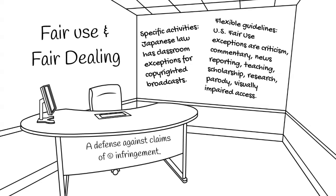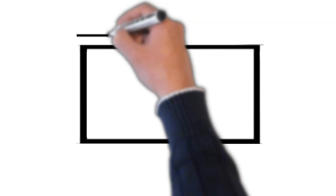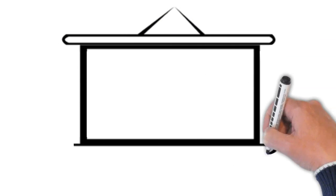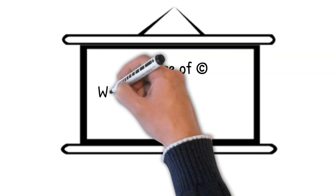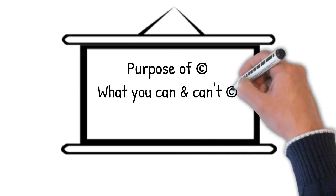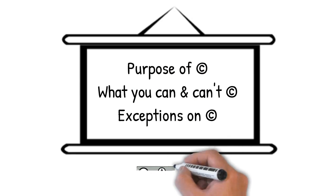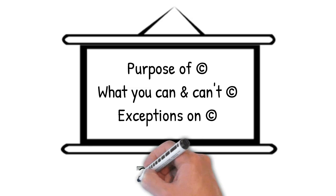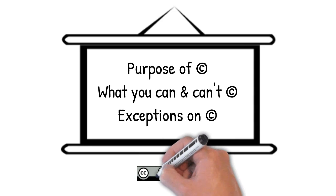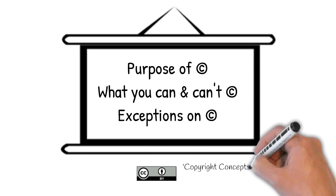If you're planning on publishing something, take the time to educate yourself about the exceptions and limitations that apply in your country or the country where you will be publishing so you can take full advantage of your rights. In this video, you've learned the purpose of copyright, what you can and cannot copyright, and some important exceptions to copyright law. For more information on Creative Commons licenses and how to use them, please visit creativecommons.org.